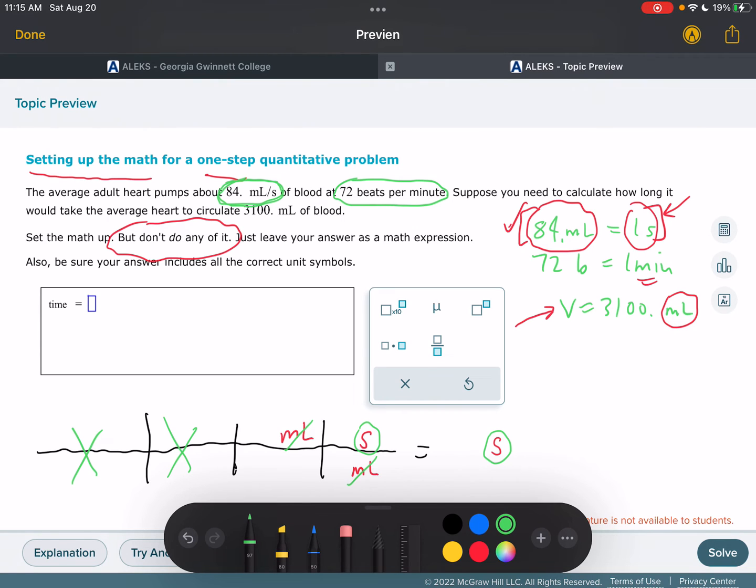Let's go ahead and put our numbers in. I'll put those in in green. The number that goes along with this first one is milliliters. That's going to be 3,100 milliliters, and that's just over one because it's just a measurement. And the milliliters in seconds is one second per 84 milliliters, right? Alright, so we're ready to go.